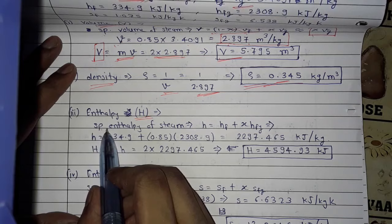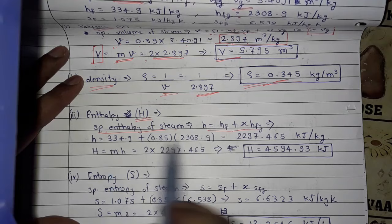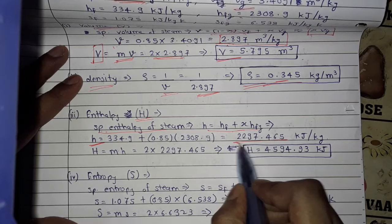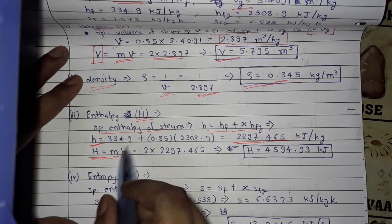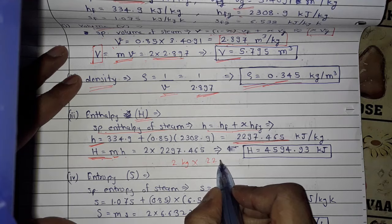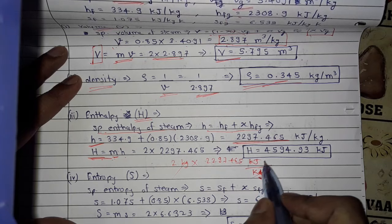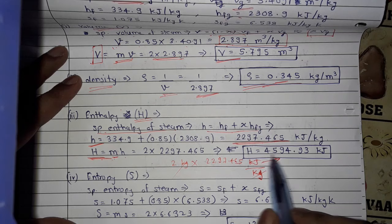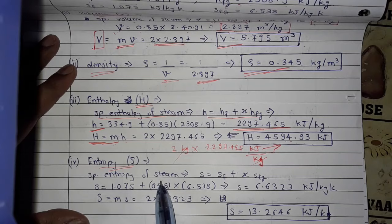Next, enthalpy. First find specific enthalpy using the same formula h = hf + x·hfg. Putting in the values and solving, we get h = 2297.465 kJ/kg. Then total enthalpy H = m·h = 2 kg × 2297.465 kJ/kg = 4594.93 kJ.